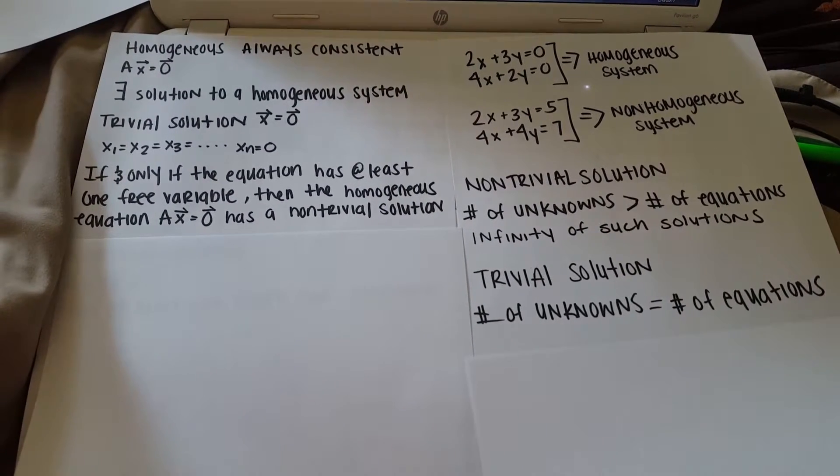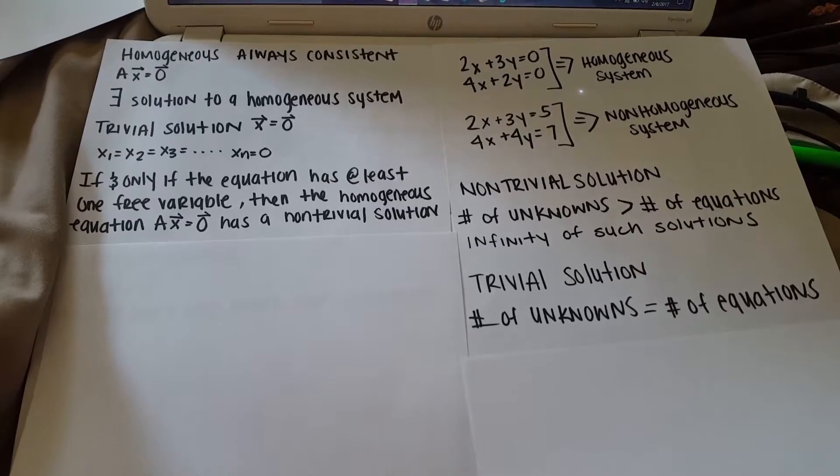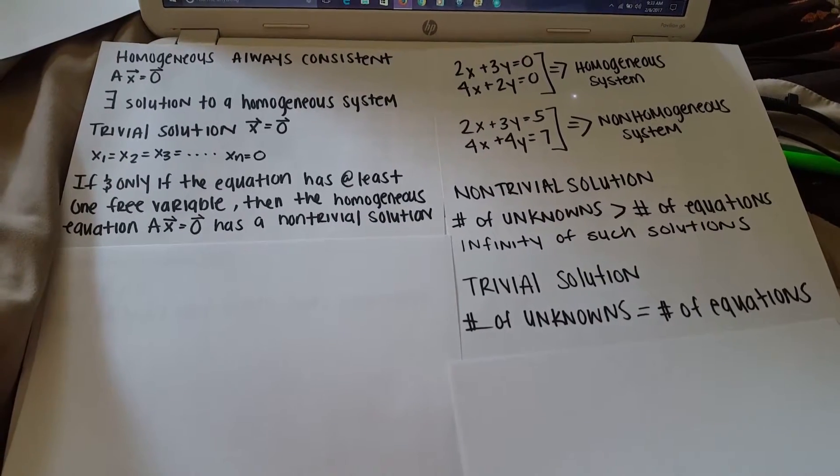Here's another way to say that: a solution is trivial when the number of unknowns is equal to the number of equations.